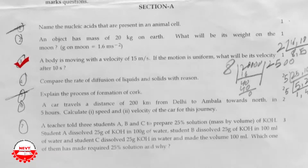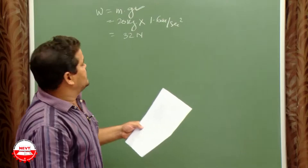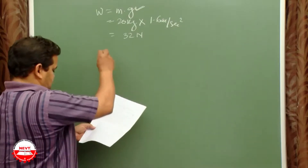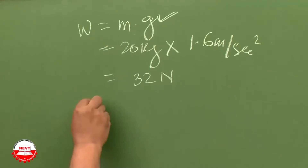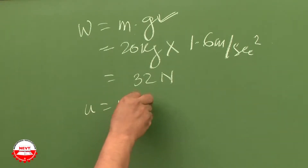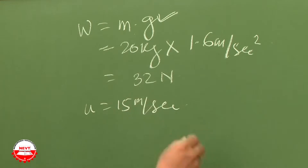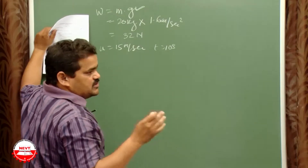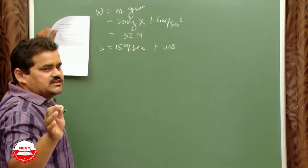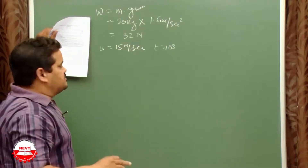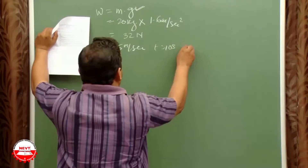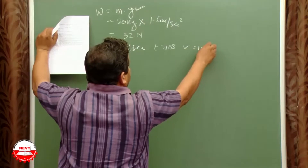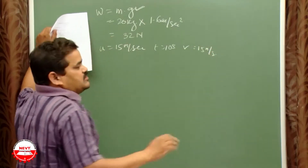Question number three: A body is moving with a velocity of 15 m/s. If the motion is uniform, what will be its velocity after 10 seconds? Since u = 15 m/s, t = 10 s, and motion is uniform (no acceleration), the velocity v remains the same — 15 m/s. Velocity never changes in uniform motion.